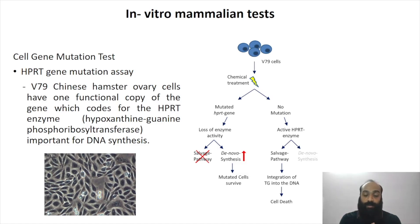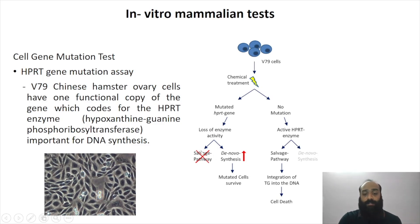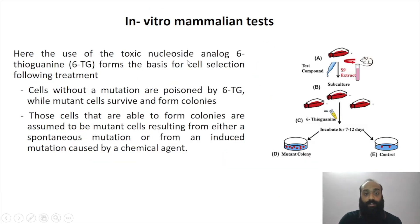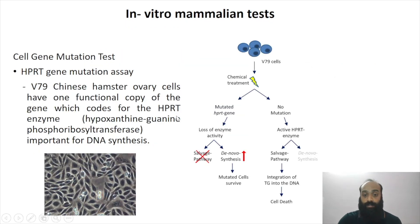There are two copies of the HPRT gene: one inactive and one active. If a mutagenic chemical converts the active copy into an inactive, mutated form, there will be a loss of the HPRT enzyme — hypoxanthine guanine phosphoribosyltransferase. This enzyme is needed for the salvage pathway. Without functional HPRT, cells shift to de novo synthesis. The toxic nucleoside analog 6-thioguanine (6-TG) causes lethality by being incorporated via the salvage pathway.